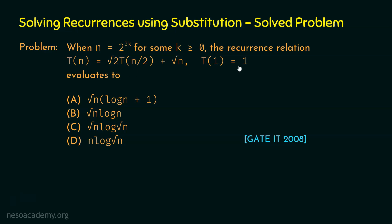We will solve this problem using the substitution method. The condition n = 2^(2k) simply tells us the values of n for which the recurrence is satisfied — plugging in k = 0 gives n = 1, k = 1 gives n = 4, k = 2 gives n = 16, and so on. The base case T(1) = 1 is satisfied at n = 1. We can ignore this constraint and proceed with the substitution method.